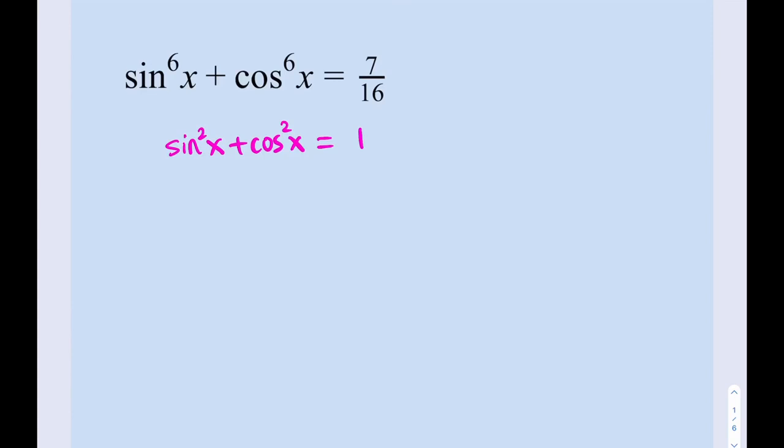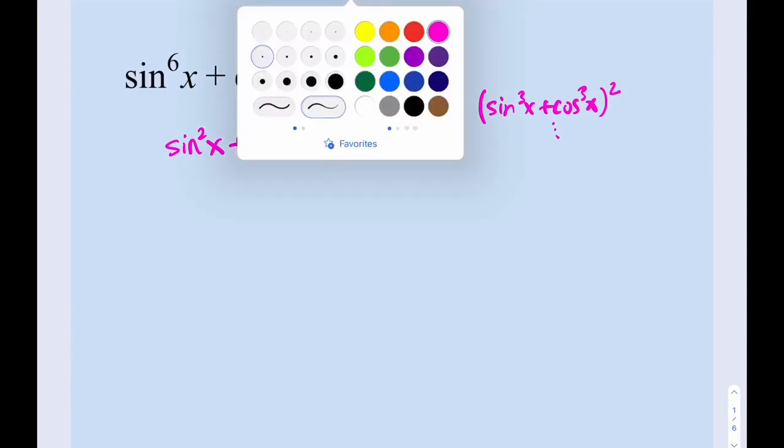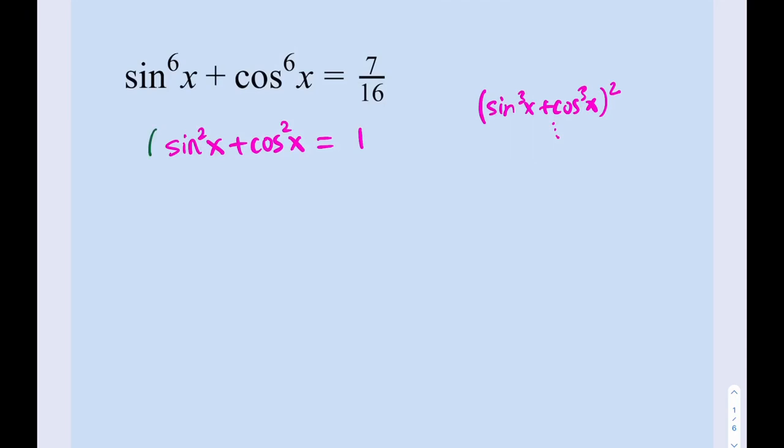You can also write sin³ + cos³ and square it, but we have no information on the sum of the two cubes. What happens if you square (sin²x + cos²x)³? You're going to be getting those terms, and then 2sin³x cos³x. So you would need the product there. That would make things a little harder. You can write it in terms of sin x and cos x, but that would probably take you longer and complicate things. So I'm going to cube both sides—well, did I say square? No, I meant cube. We're going to cube both sides.